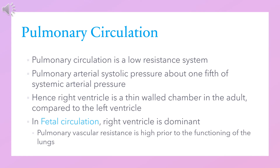Pulmonary circulation is a low resistance system. Pulmonary arterial systolic pressure is about one-fifth of the systemic arterial pressure. Hence, the right ventricle is a thin-walled chamber in the adult compared to the left ventricle, which faces the systemic circulation.